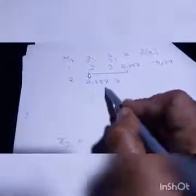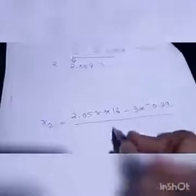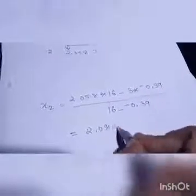So x2 is equal to, again here a is 2.058, b is the same thing, f(a) is minus 0.39, f(b) is 16 which we got previously. So 2.058 into 16 minus 3 into minus 0.39 divided by 16 minus minus 0.39 and you get 2.08121.